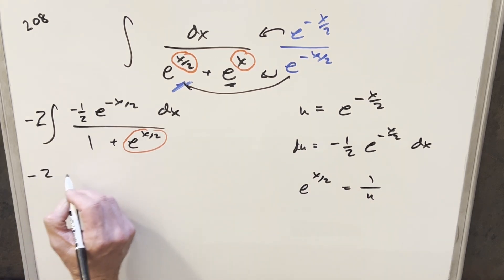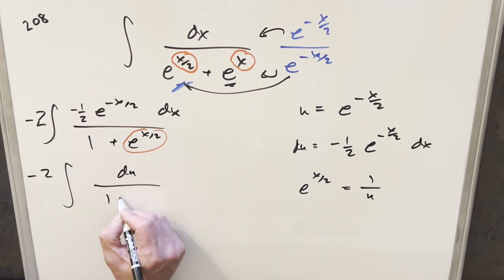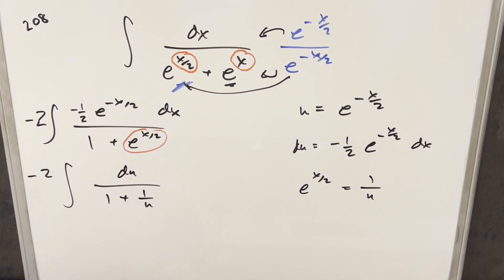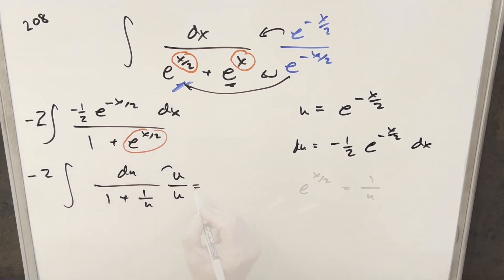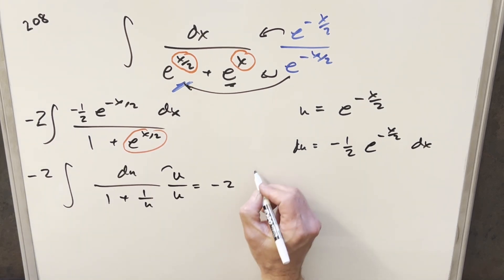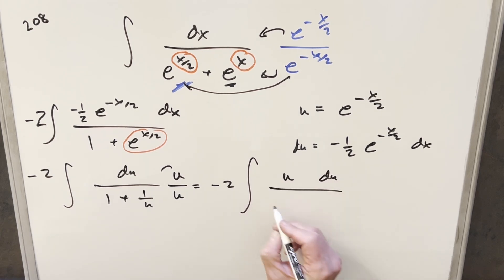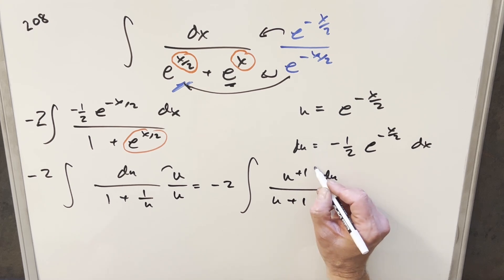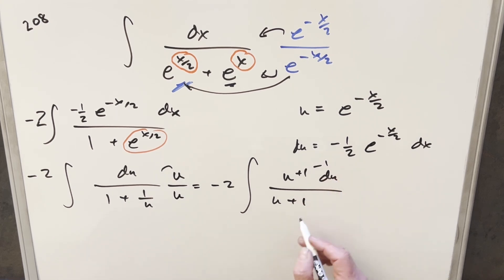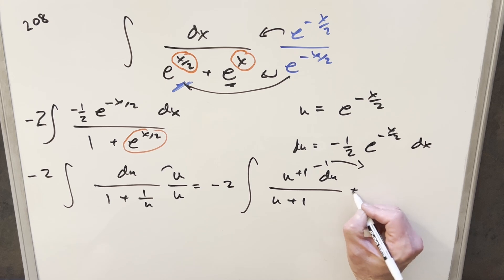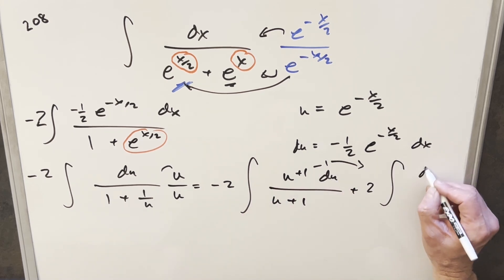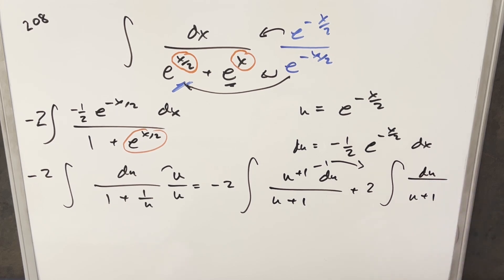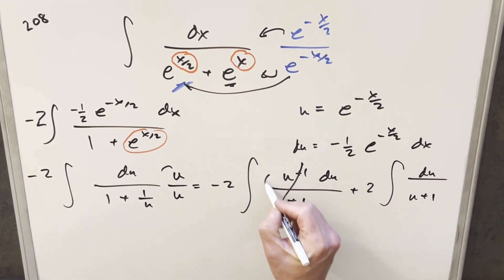Going ahead with this, we end up with minus 2 times the integral of du over 1 plus 1 over u. Cleaning it up by multiplying through by u over u, this becomes minus 2 times the integral of u du over u plus 1. I'll add and subtract 1 in the numerator to get cancellation — splitting off a second integral. Multiplying minus 1 times minus 2 gives a plus 2 in front, so the second integral becomes 2 times the integral of du over u plus 1. The first part cancels to just 1.